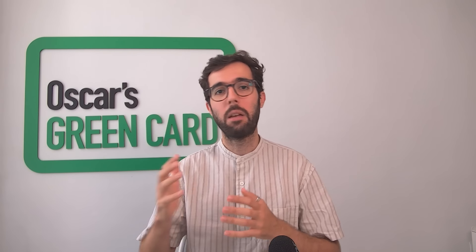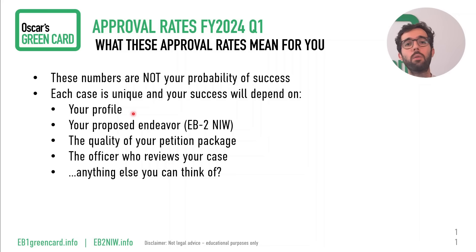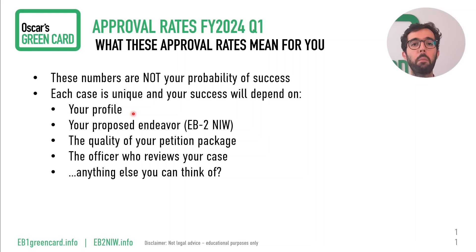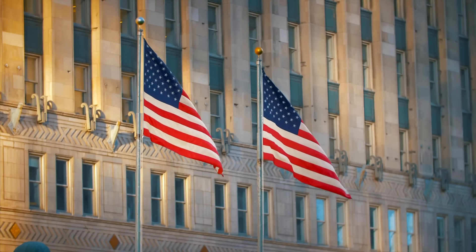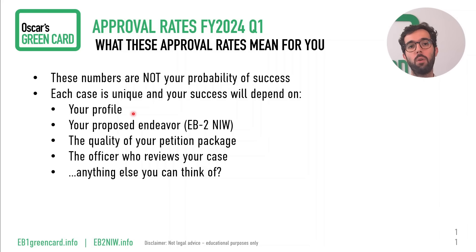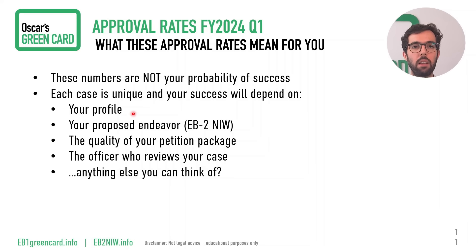Remember that these are just general numbers. They don't mean this is your actual probability of success at EB2NIW or EB1A, because that depends on different factors. For example: what is your profile — is it strong or weak? Do you really qualify? What is your proposed endeavor if we're talking about EB2NIW specifically, and are those plans important for the nation? Do you have a good petition package and well-crafted documents to support all the evidence? The quality of that also plays a big role.